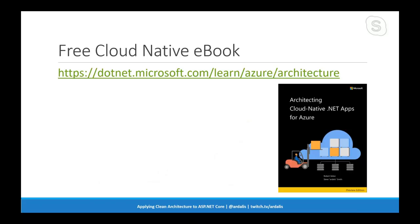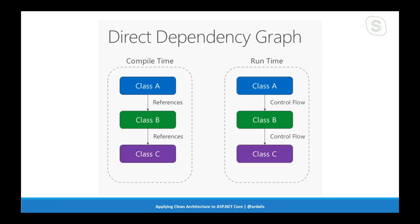I have a whole slide deck that takes about an hour at a conference to talk about clean architecture and principles. I'm going to skip to the end and talk about just the most important parts, which have to do with dependencies. In a typical old-school N-tier application, your direct dependencies — because you're newing up something or making a static call — look like this on the left, where a class references another class by newing it up and it references another class. At runtime it runs the same way it compiles.